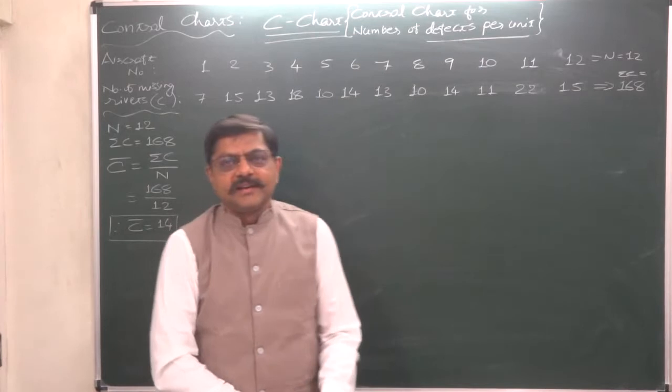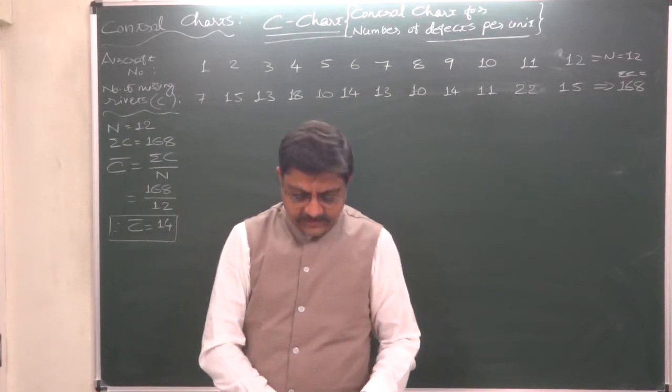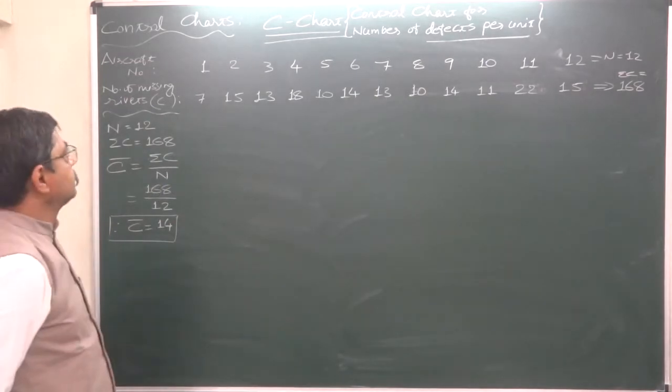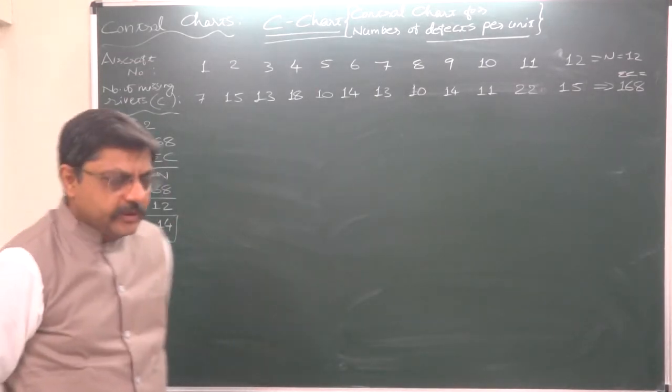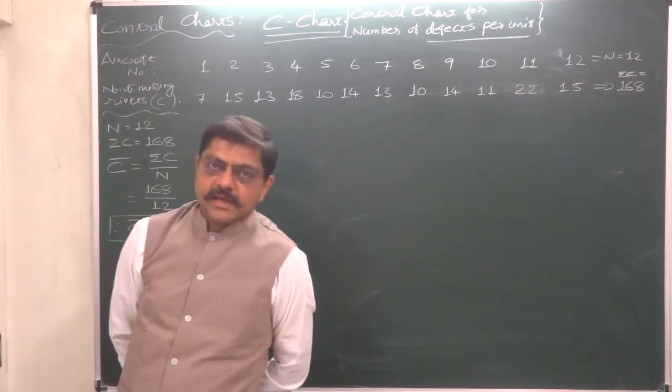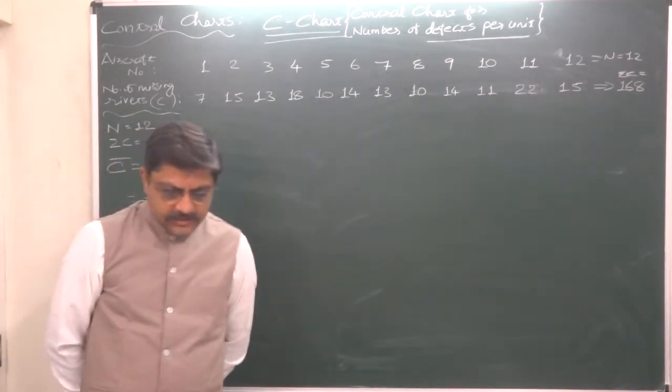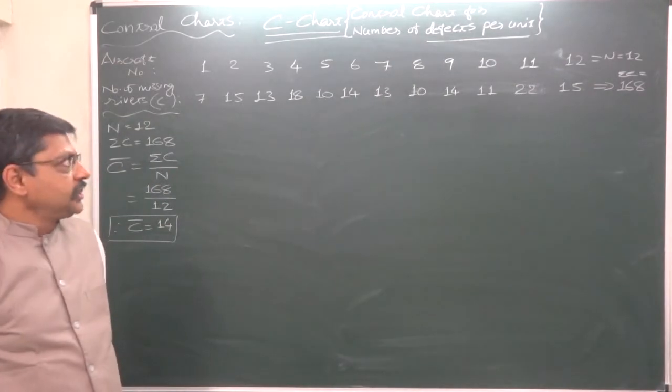Hello and welcome to Hunar Academy. In statistical quality control, our topic is control charts, and now we have reached the last type of control charts, known as C chart. It is the control chart for number of defects per unit.